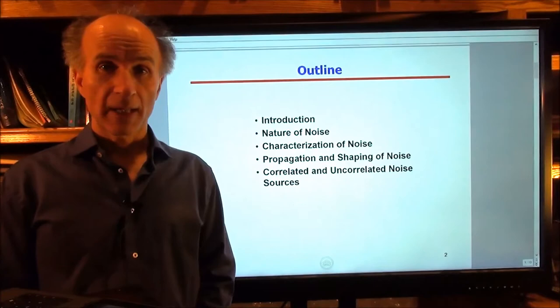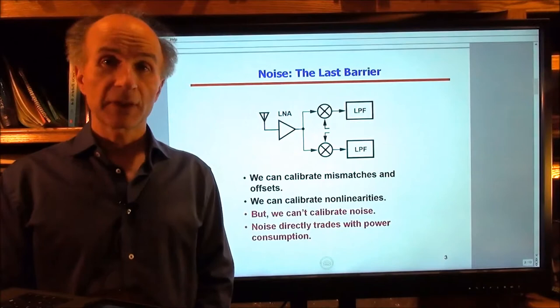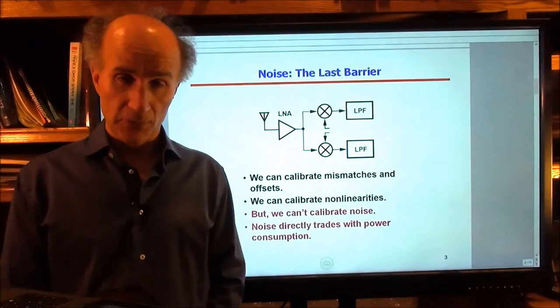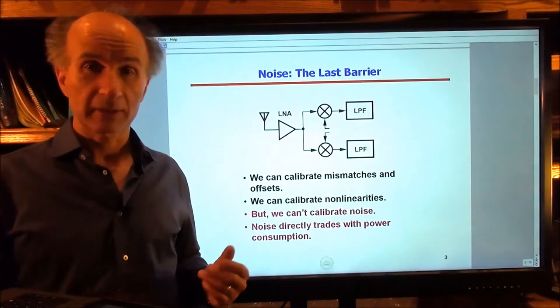Noise seems to be the last barrier in circuit design. Through clever techniques we have managed to correct for many imperfections in our circuits and systems. In an RF receiver, for example, we can calibrate mismatches and offsets. We can calibrate even nonlinearities, but generally we cannot calibrate noise simply because noise is random and not predictable.